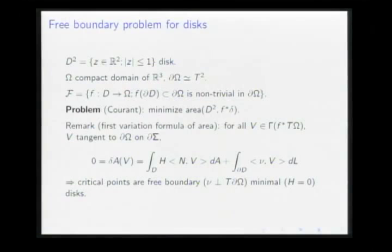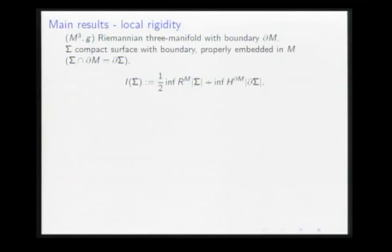Now, a little bit of notation. From now on, M will be a Riemannian three-manifold with boundary. I will denote by sigma any compact surface with boundary which is properly embedded in M — meaning sigma is embedded and meets the boundary appropriately. I will denote by I(sigma) the following expression: the infimum of scalar curvature over M, times the area of sigma, plus the infimum of mean curvature of the boundary of M, times the length of the boundary of sigma.